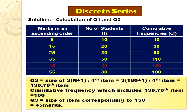Now let us compute Q3. The formula is the size of 3(n+1)/4th item. Putting n = 180, we get 3(180+1)/4 = 135.75th item. We look this up in the cumulative frequency — it falls in the row with CF = 150, as highlighted. The corresponding marks value is 45. So Q3 = 45 marks. We have now learned how to compute Q1 and Q3 in the case of discrete series.